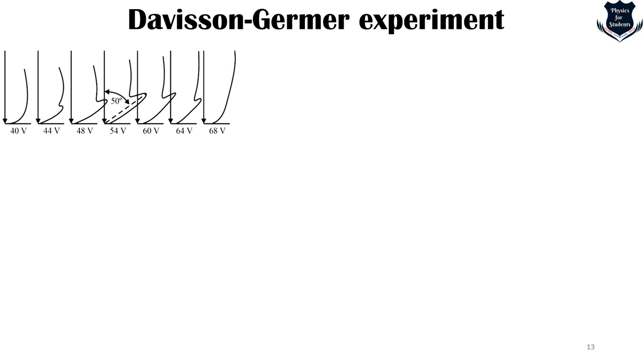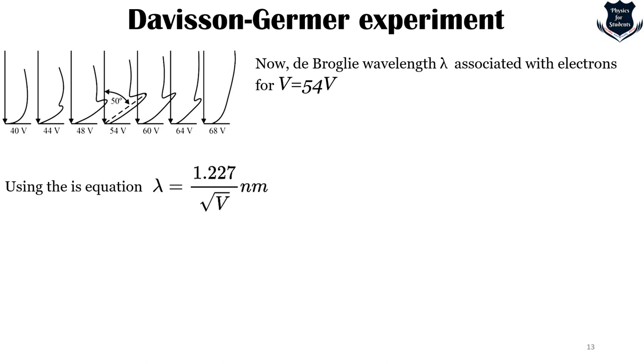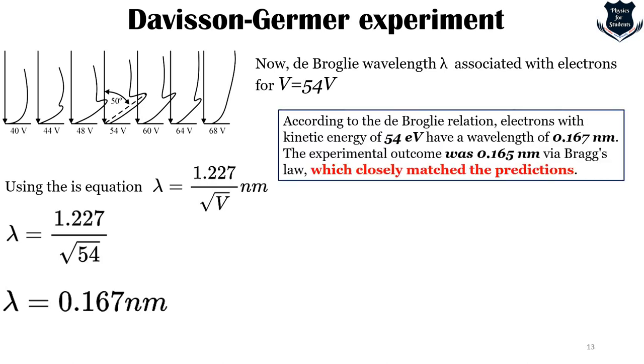We know from the previous figure that the de Broglie wavelength for electrons with an angle of 50 degrees is at 54 volts. Using the equation we just derived, we can substitute the value of the square root of V and finally get the result. This suggests that according to the de Broglie wavelength relation, the electrons with kinetic energy of 54 electron volts have a wavelength of 0.167 nanometers, which is experimentally more or less equal to 0.165, determined earlier due to Bragg's law, which closely matched with the relation.